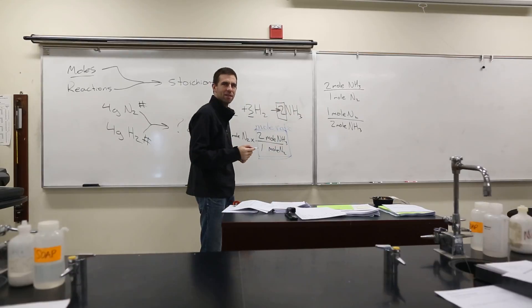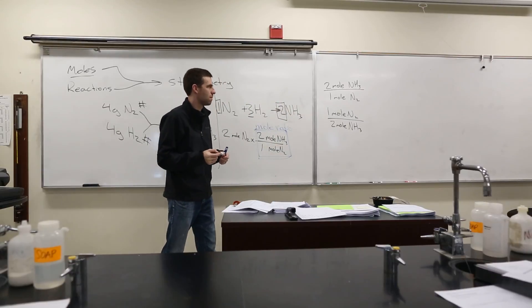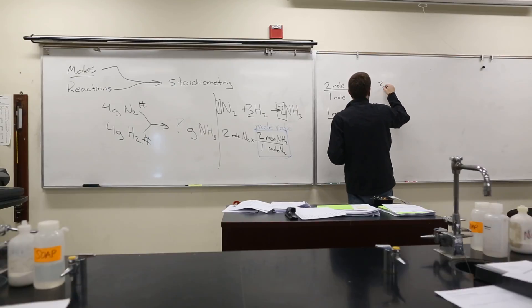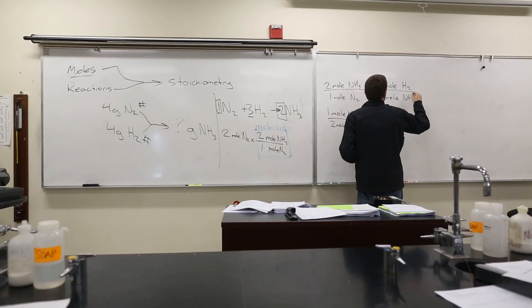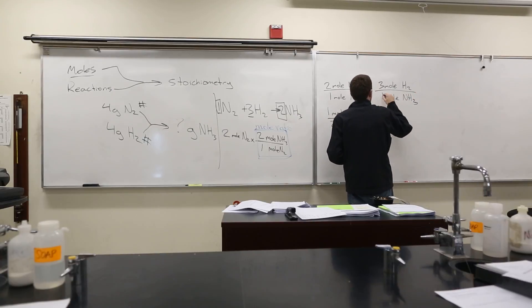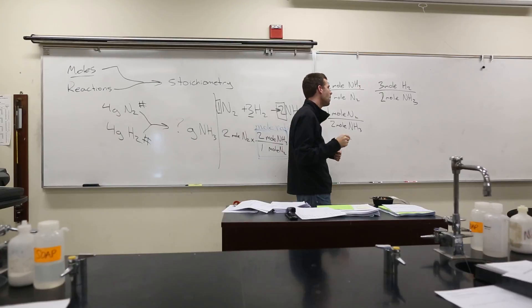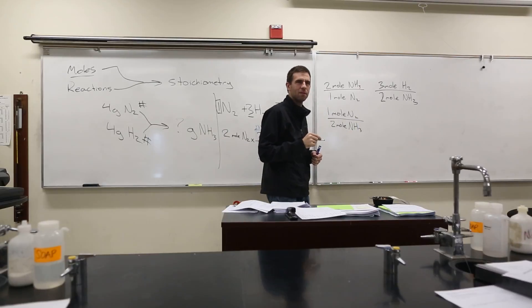Now what else can I write? With H2. Very good. H2. So what can I put on top? Let's do three moles on top. I have H2. What goes on the bottom? One mole of NH3. I mean, sorry, two. Two moles of NH3, right? What can I do to that now? Flip it over.